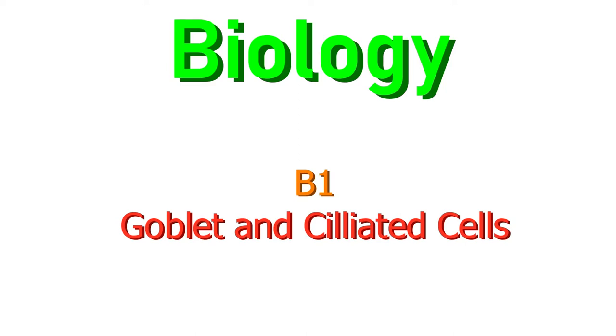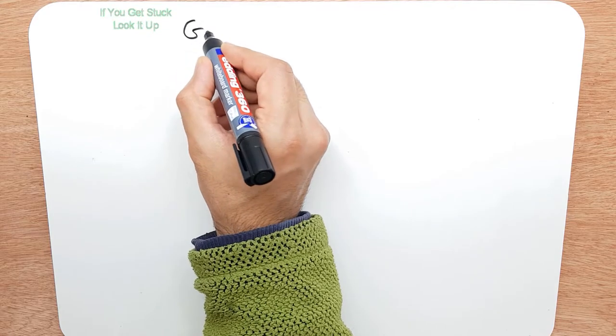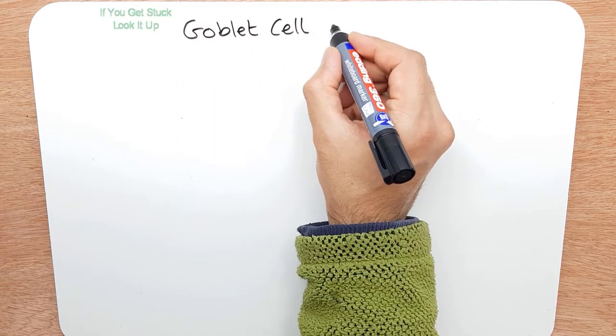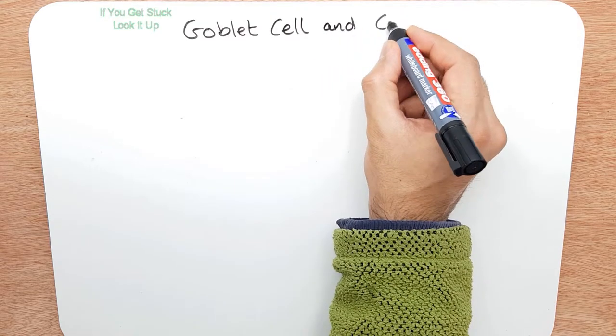Now we want to look at two more cells, so we'll keep it simple. We'll call it the goblet cell and the ciliated cell.